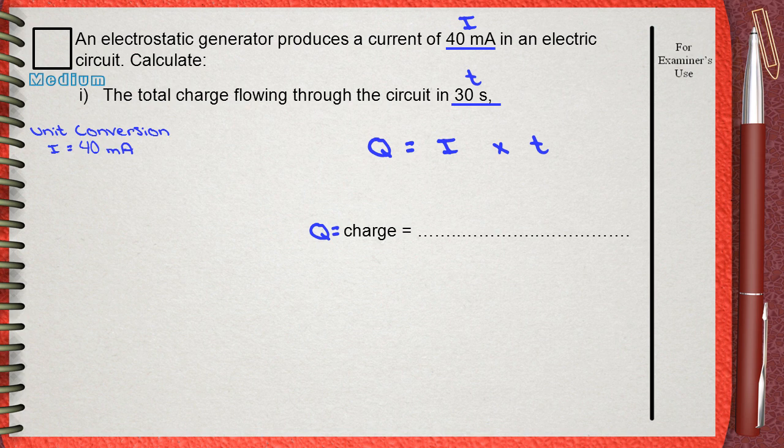I equals 40 mA. The word milli means 1 over 1000. So, I equal 40 times 1 over 1000 A. This is 0.04 A. So, 40 mA will be replaced in our calculation with 0.04 A.